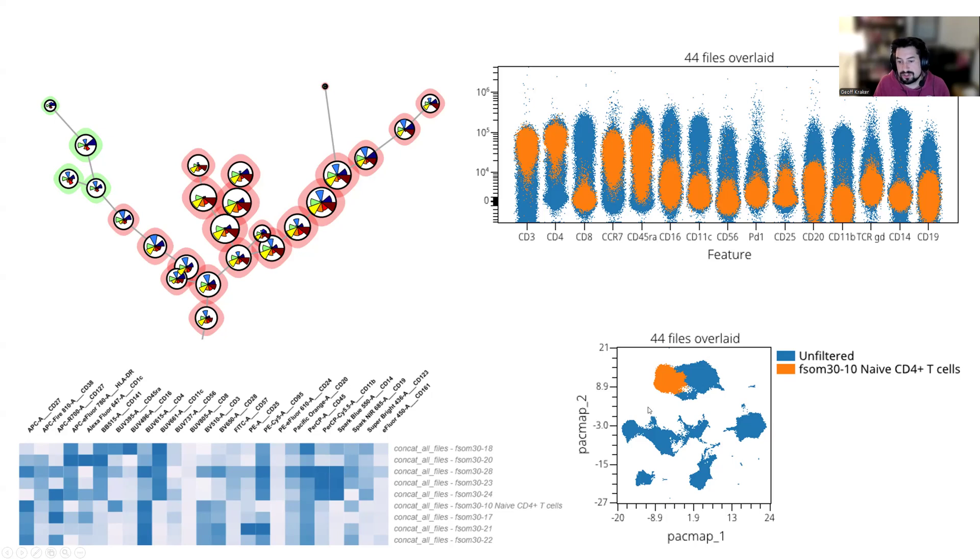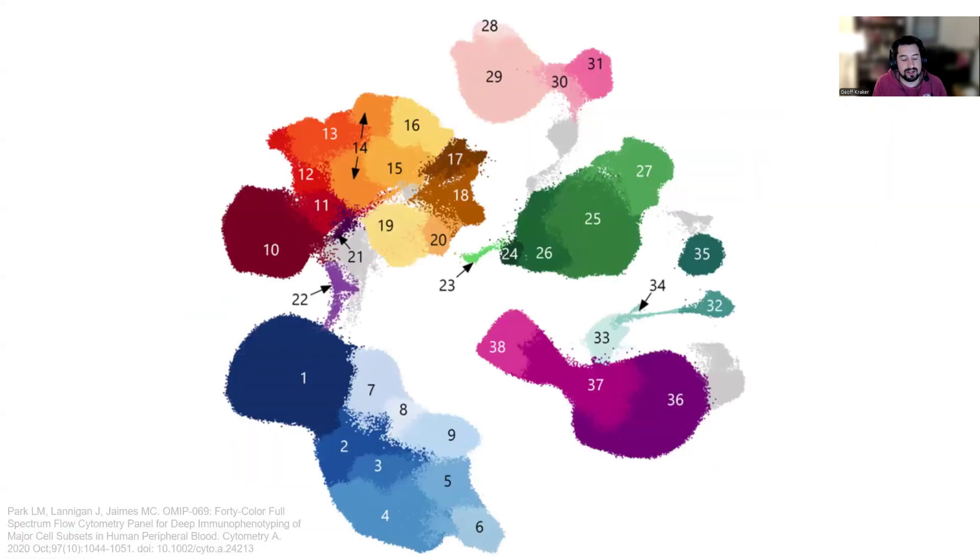And then also, you can overlay clusters on dimensionality reduction results if you've run both sets of algorithms in your particular workflow. And so this is a figure that many of you, I'm sure, are familiar with. This is from the OMIP69 paper. And here you can see a whole series of clusters overlaid on top of some UMAP, in this case, dimensionality reduction channels. So you get an idea of where each of these clusters lies in relation to all of the other ones on this kind of pre-established UMAP visualization. And this has become a common way to look at clustering results in the field.